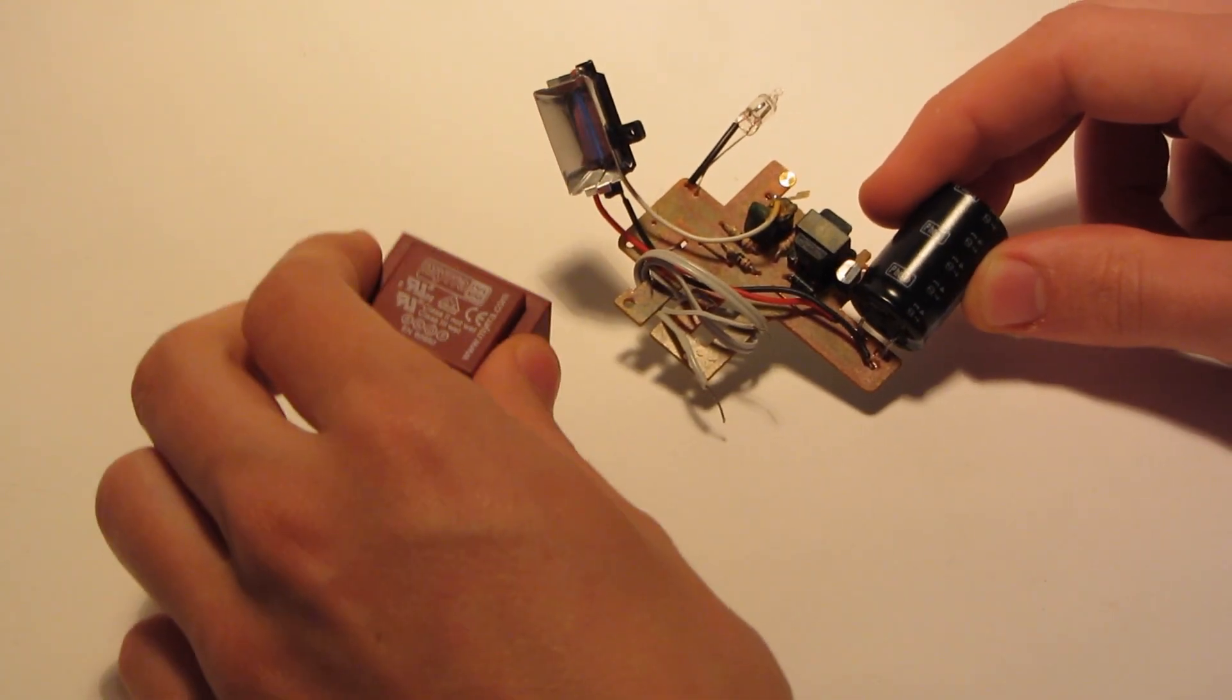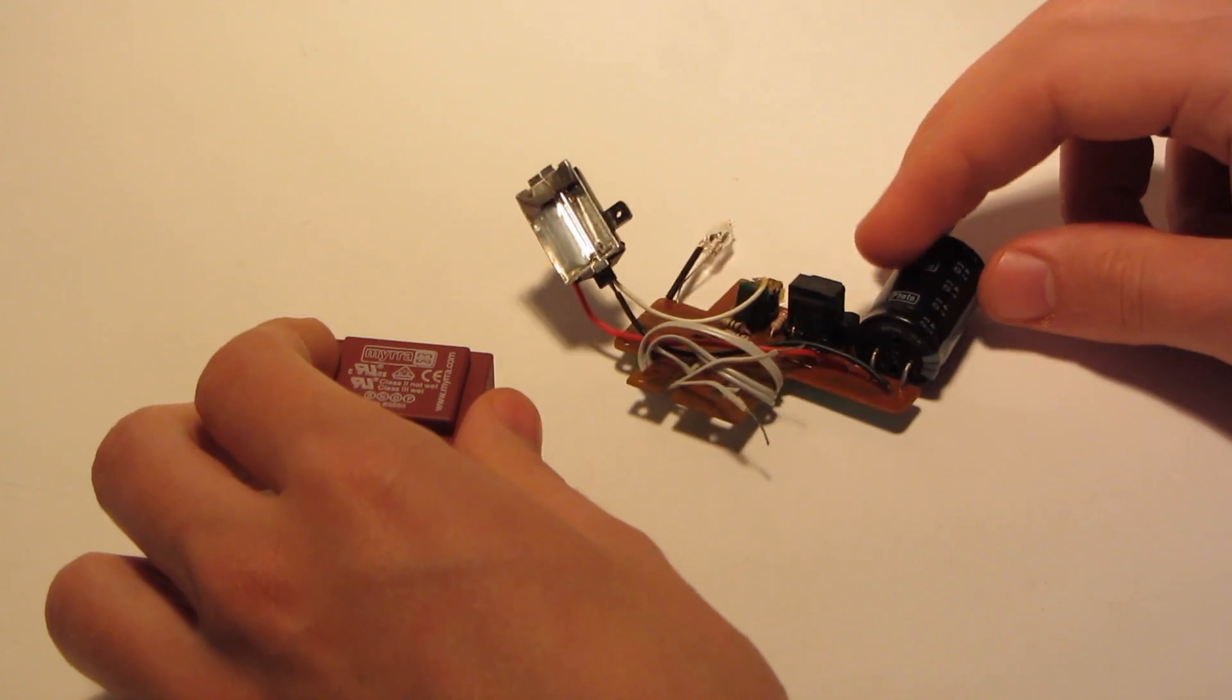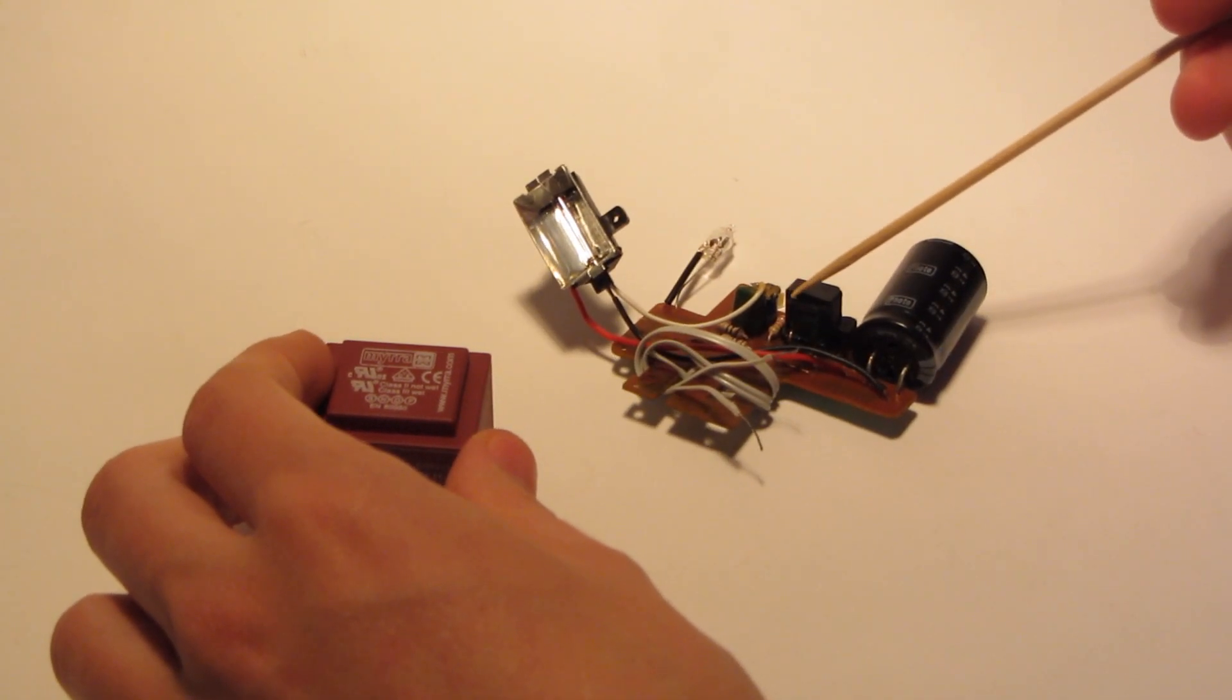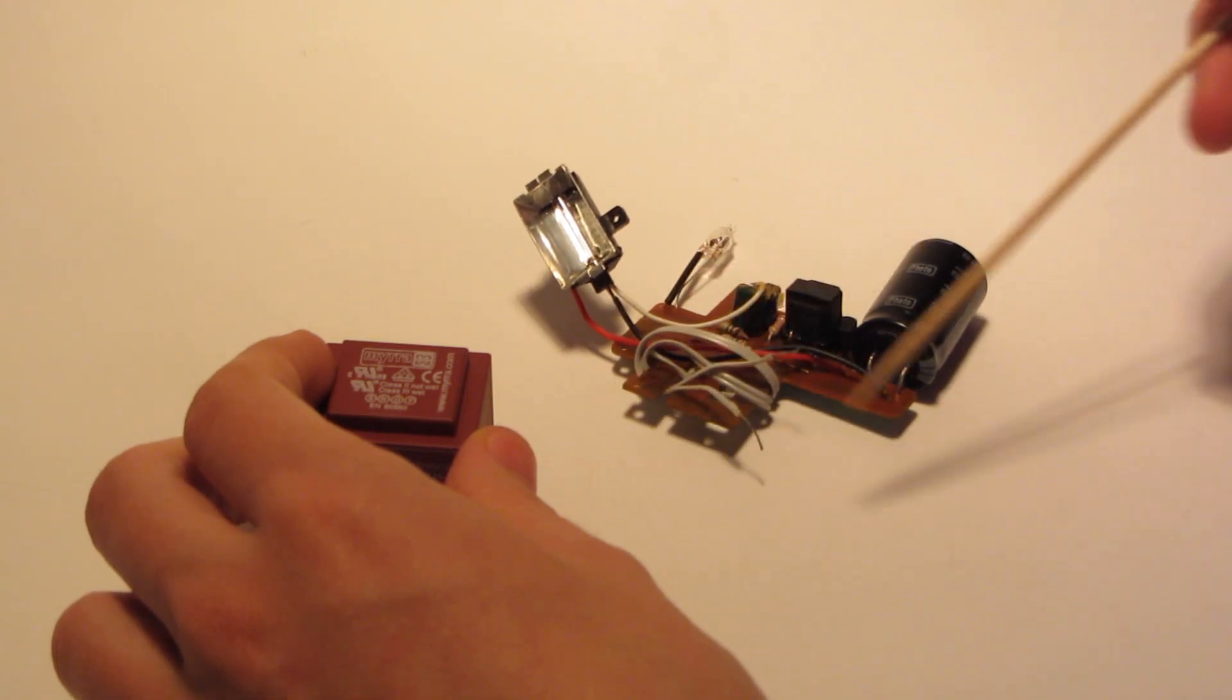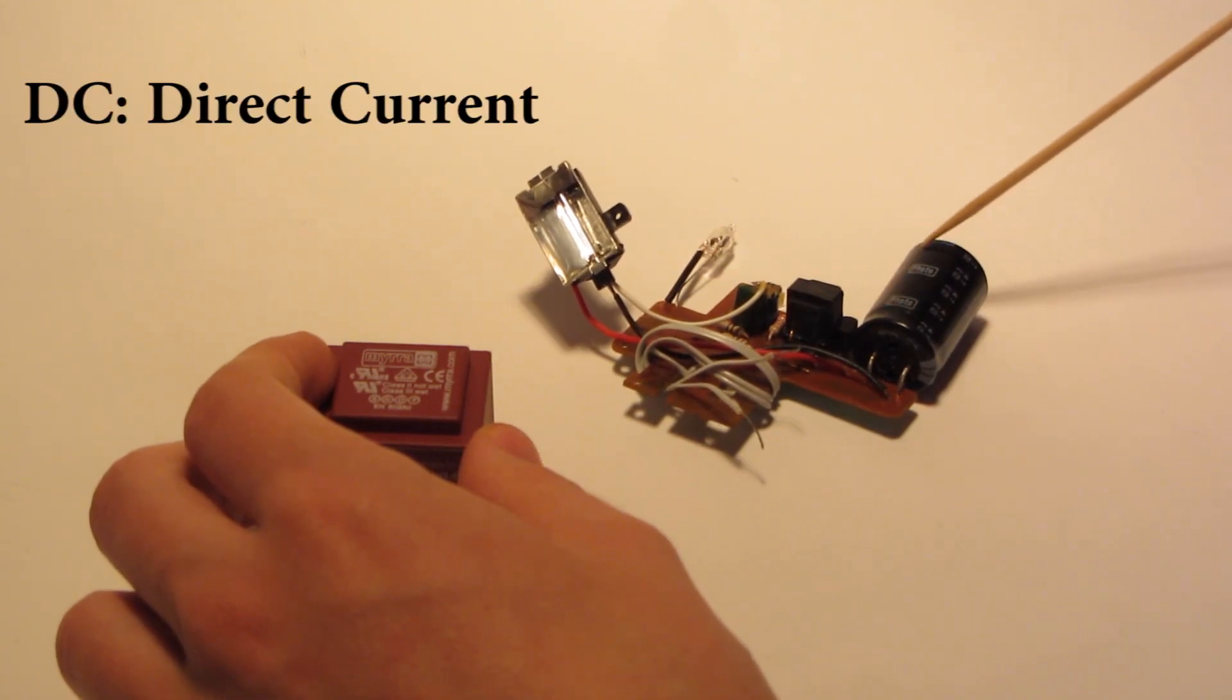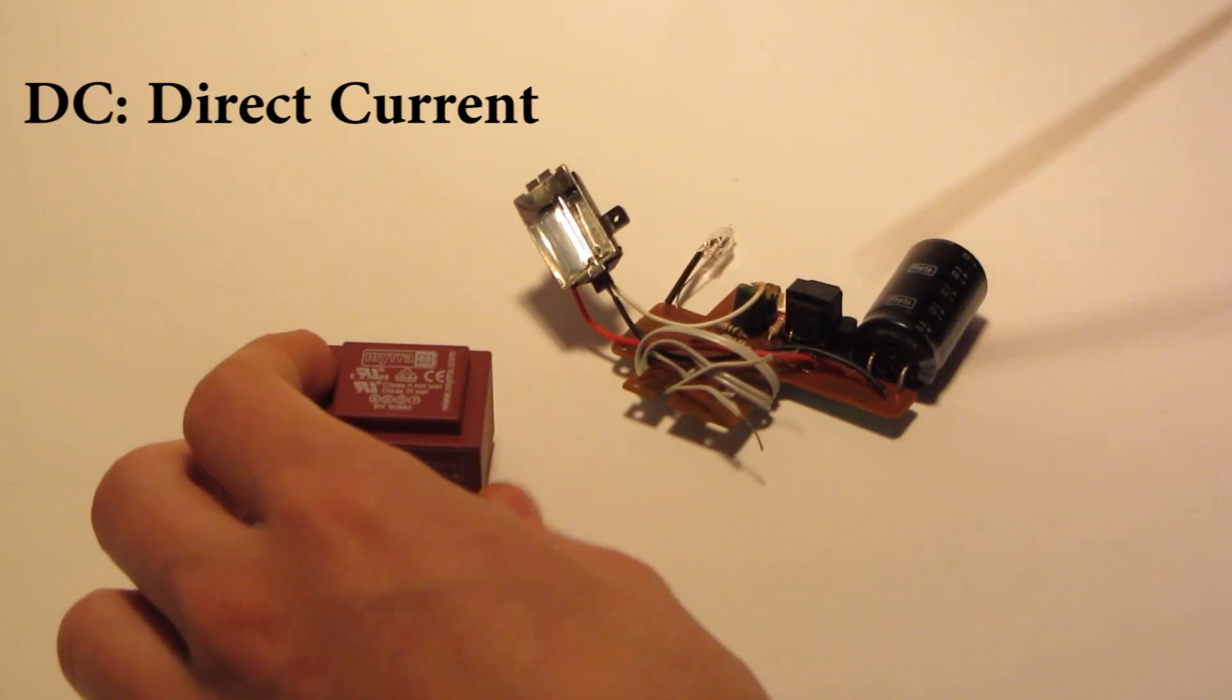This is a bigger transformer, and I usually use these small transformers from flash circuits. What they do is they take 1.5 volts and transform it to 300 volts DC. The DC charges the capacitor and you can use it later.